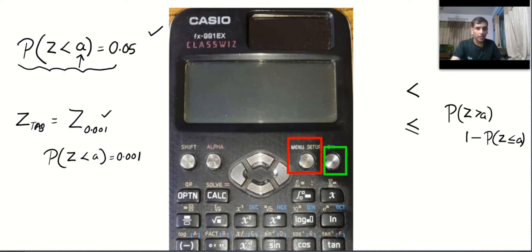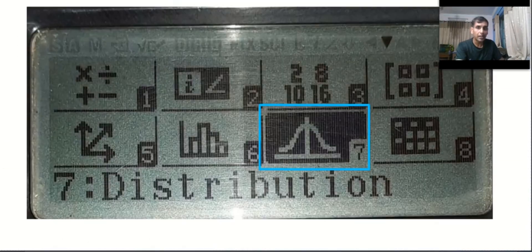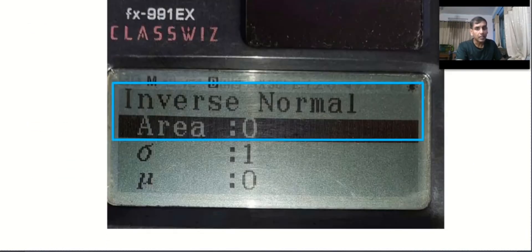Take your calculator, turn it on and go to menu and you will see the standard normal graph. That is 7. And click it and you will see the inverse normal value.